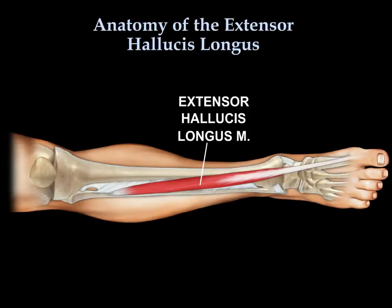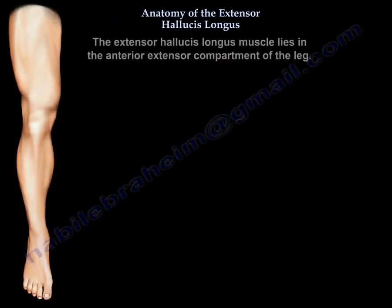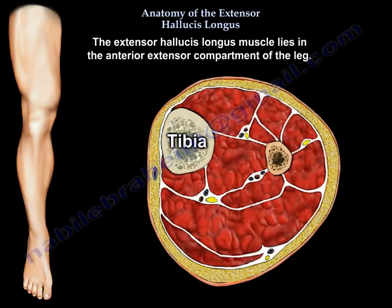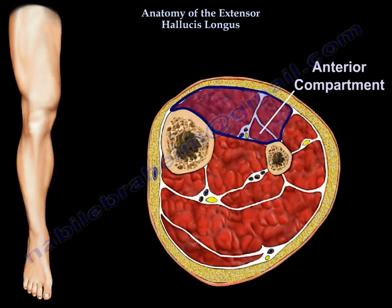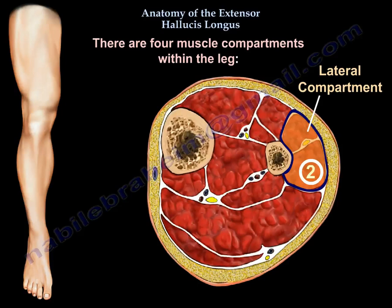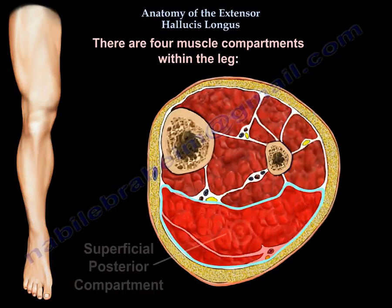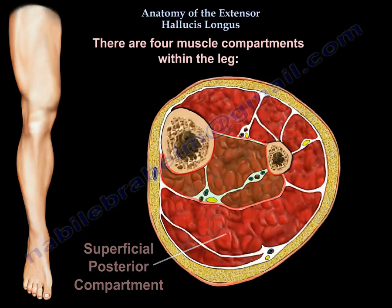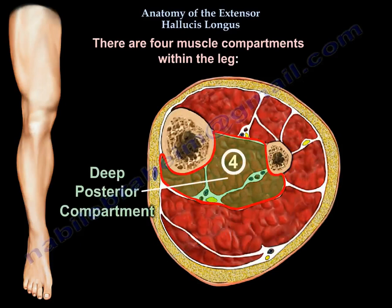Extensor hallucis longus lies in the anterior extensor compartment of the leg. There are four muscle compartments in the leg: the anterior compartment, the lateral compartment, the superficial posterior compartment, and the deep posterior compartment.